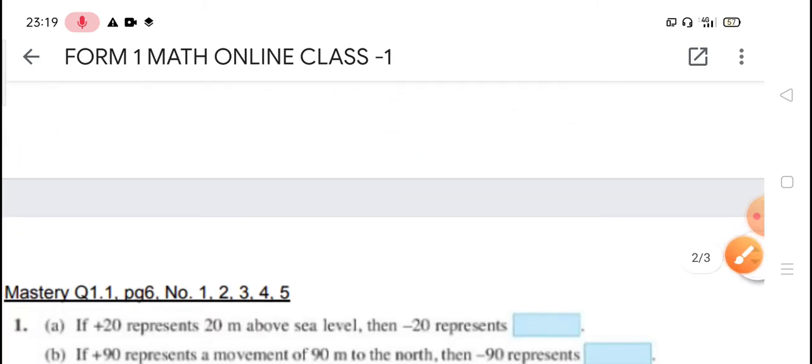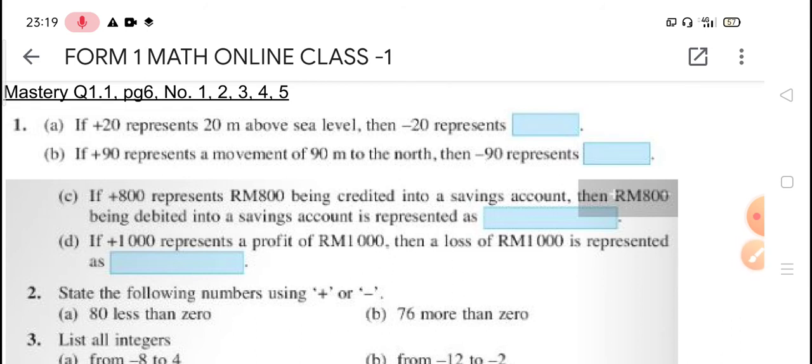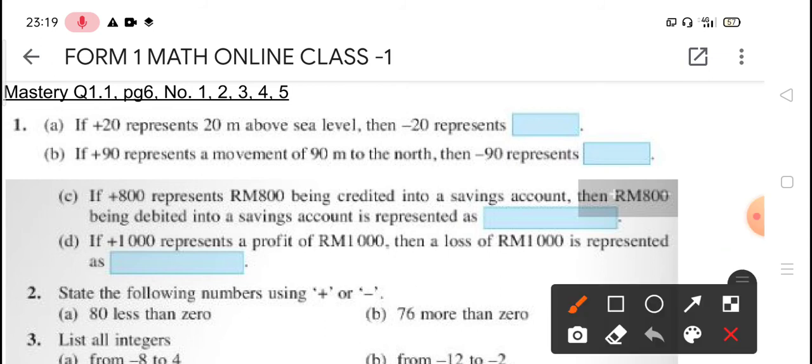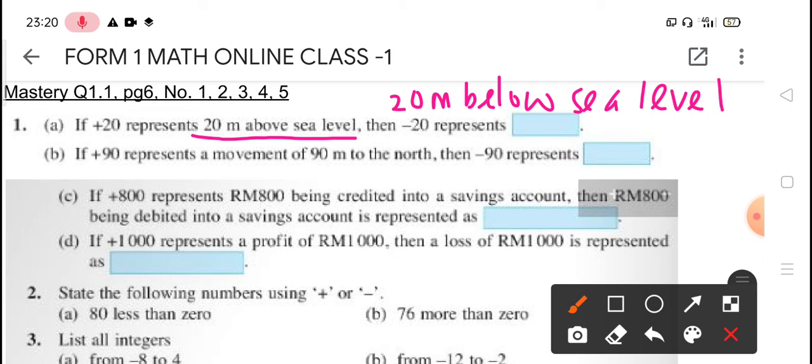Next, we move on. Mastery Q 1.1 from your textbook, page 6, number 1 until number 5. So now we move on. If positive 20 represent 20 meter above sea level, so the negative 20 means negative 20 meter below sea level. So we just change the keyword based on the given sentence from above to below.